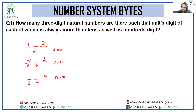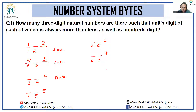By now you can see the pattern emerging: 1×2, 2×3, 3×4, and continuing: 4×5 for unit digit 5, 5×6 for unit digit 6, 6×7 for unit digit 7, 7×8 for unit digit 8, and 8×9 for unit digit 9.